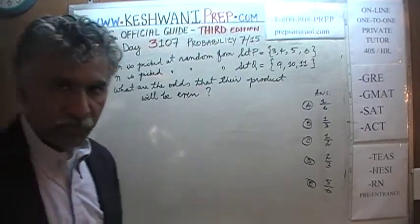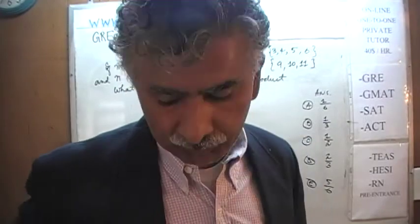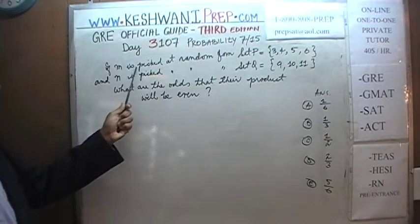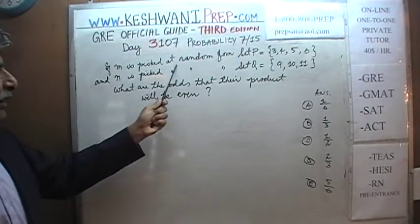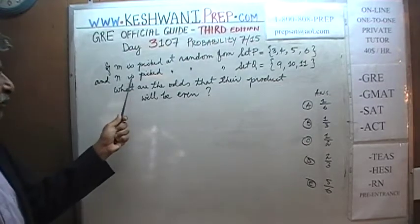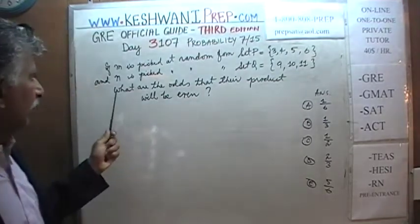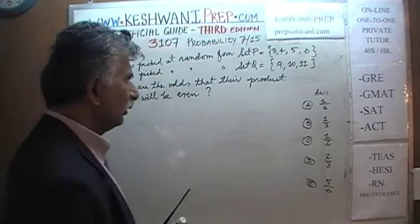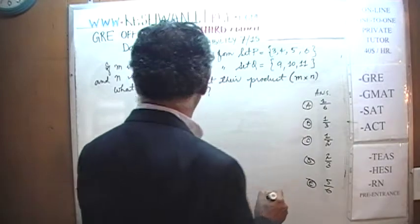The problem is already on the blackboard. This problem is not from the book — don't look for it, you won't find it. It says: if M is picked at random from set P, which consists of 4 members — 3, 4, 5, 6 — and if N is picked from set Q, which has 3 elements — 9, 10, and 11 — what are the odds that their product, M times N, will be even?